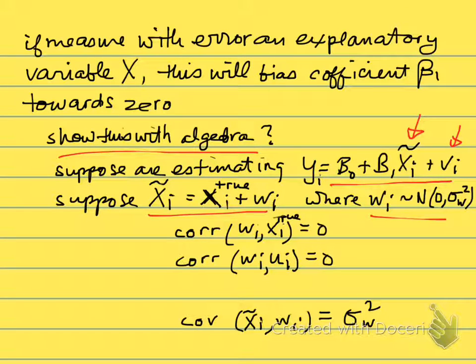Where wᵢ, we'll just imagine for now, is just normally distributed, mean zero, and has variance σ²w. Now, before we go on, let's note some other assumptions. The correlation between this measurement error wᵢ and the true X, we'll assume that there's no correlation there. We'll assume that there's no correlation between the measurement error wᵢ and uᵢ, which we're going to call the true error, the error associated with the regression.